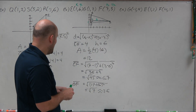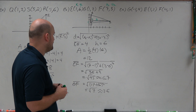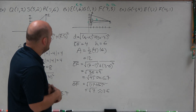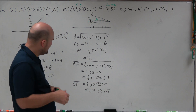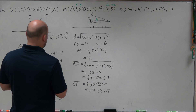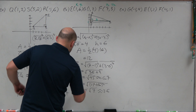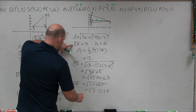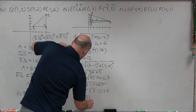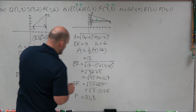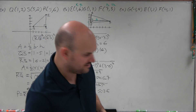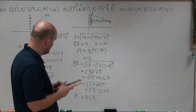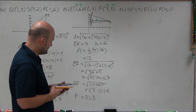Adding all sides up: EG is 4, EF is 6.7, and GF is 2.6. The total gives us a perimeter of 13.3. Let me double-check — that's 21.3.